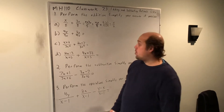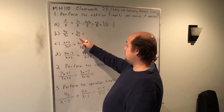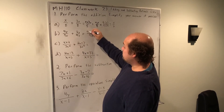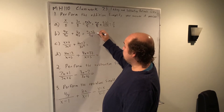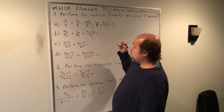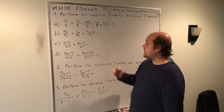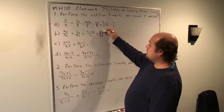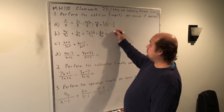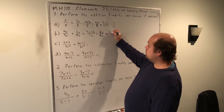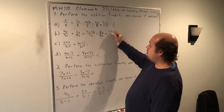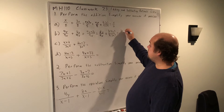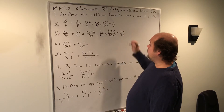Same idea in part B. I have the same bottom to begin, so I keep that same bottom 9X, and I combine the two tops: 4Y plus 2Y. When I combine 4 and 2, since they are like terms, that gives me a total of 6Y still over 9X. I can then reduce top and bottom by 3. On top it's 3 times 2Y, on bottom it's 3 times 3X, so when I get rid of those 3's I'm left with 2Y over 3X.